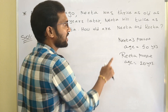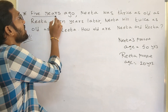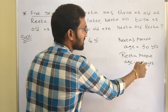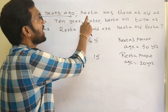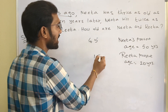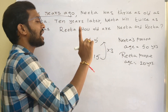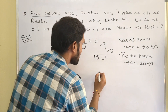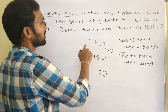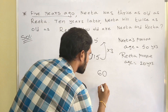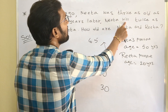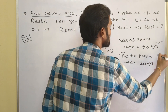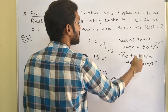After solving, we always cross-check the answer. 5 years ago: Nita's age was 50 minus 5 equals 45, and Rita's age was 20 minus 5 equals 15. And 15 times 3 is 45 — yes, the first statement is satisfied. For 10 years later: Nita will be 60 and Rita will be 30. And 30 times 2 is 60 — correct. Nita's present age is 50 years and Rita's present age is 20 years.